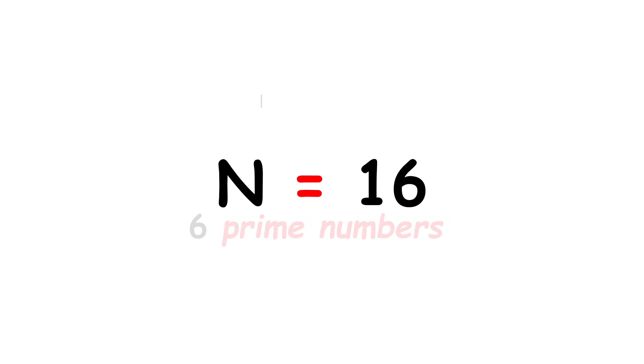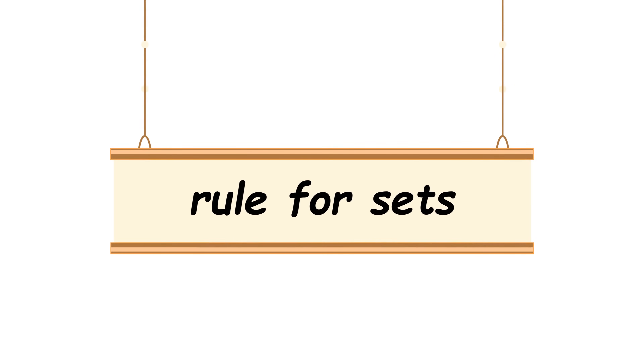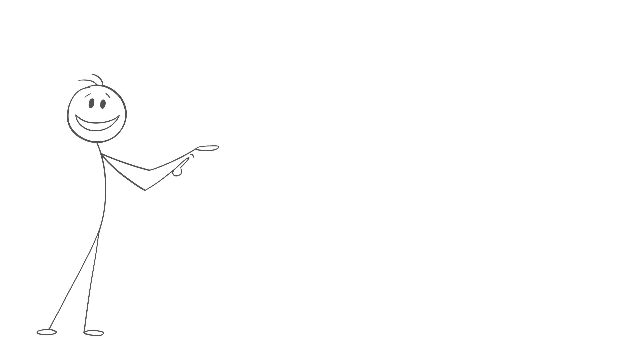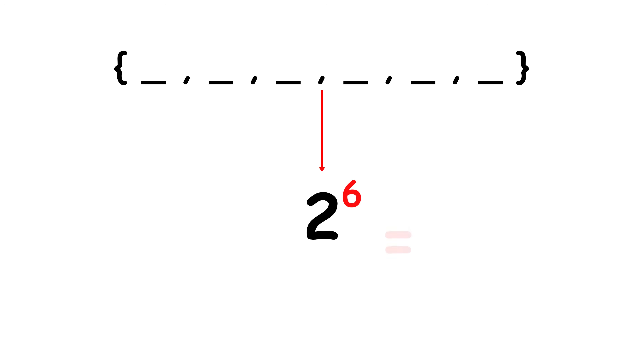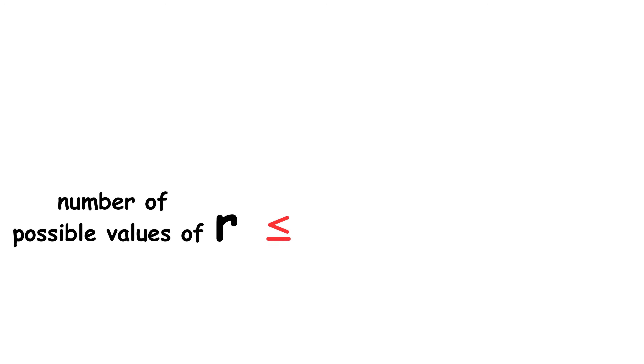Because the number R has this property, it is always given by a certain subset of the set of prime numbers which are less than or equal to N. Our N equals 16 example has 6 prime numbers less than or equal to N — in other words, these 6 prime numbers are the 6 elements of our set. Here, we can use a rule for sets: if you have a set, then the number of subsets equals 2 to the power of the number of elements in the set. This is because when you create a subset, you have to choose whether or not to include each element of the original set, and each choice multiplies the number of possibilities by 2. In our example, we have a set with 6 elements, so the number of possible subsets is 2 to the power of 6, which equals 64.